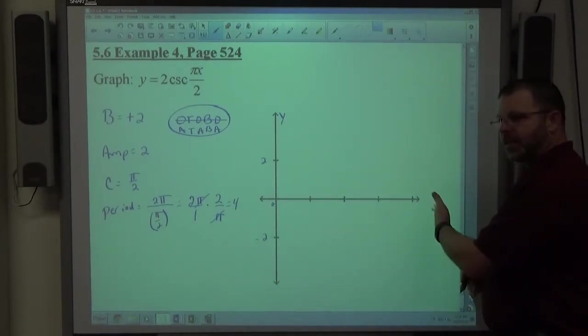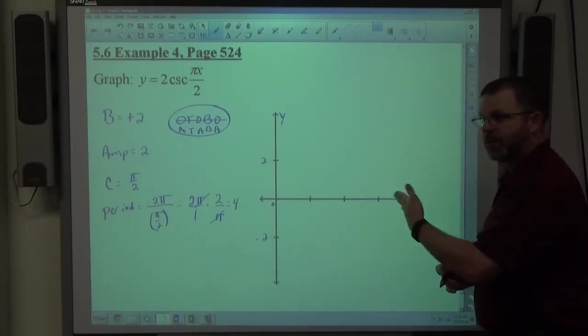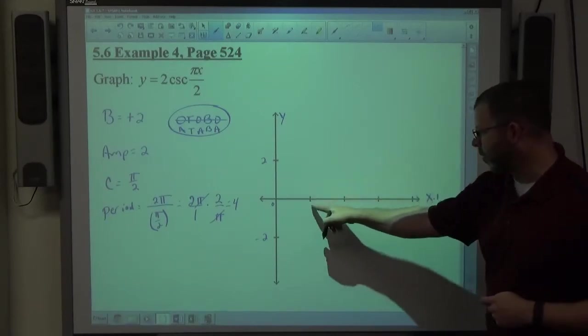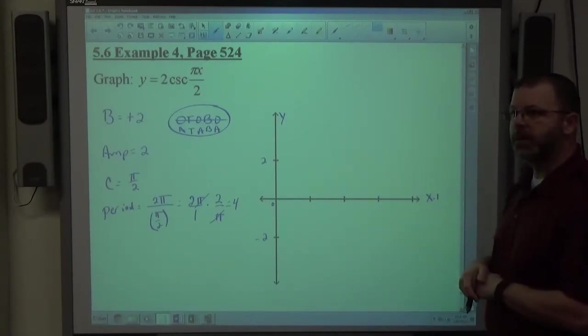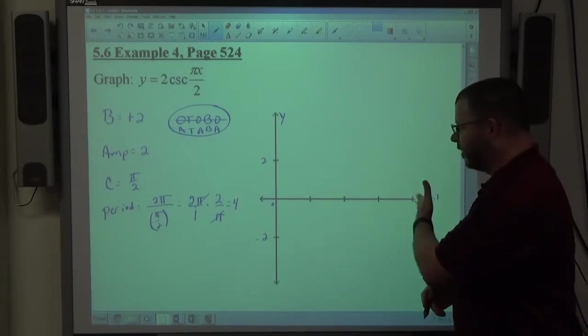We've done our 4 dashes here, right? So 4 divided by 4 is 1, so x is going to be going to 1 scale. Again, 1 scale or 1, 2, 3, 4, whatever you want to do is fine. Once you get everything set up properly...